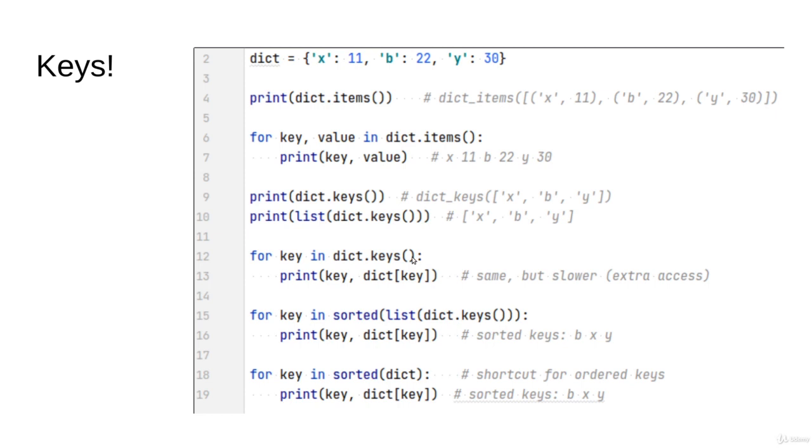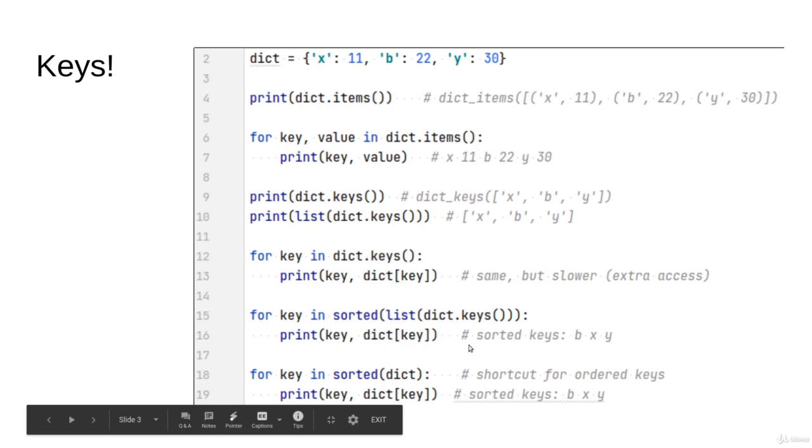Let's say you would like to iterate on the keys but sorted by the value. One way is you create a list here and then you sort it and use it. This isn't the best, most efficient way. You can get the list and sort it, but as a shortcut here you can say 'for key in sorted(list(dict.keys()))'.